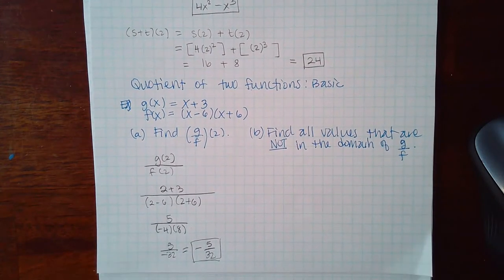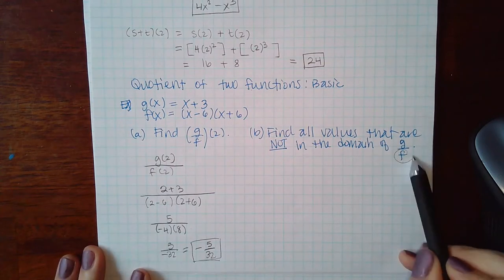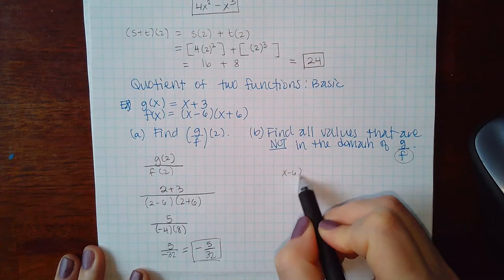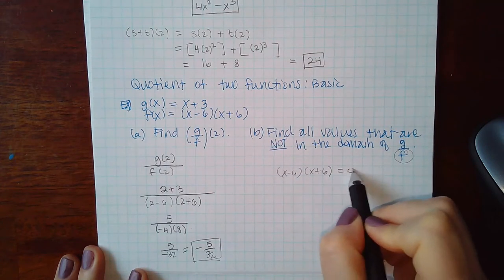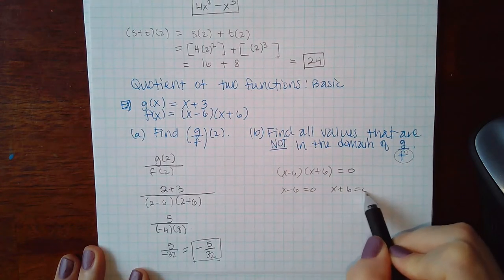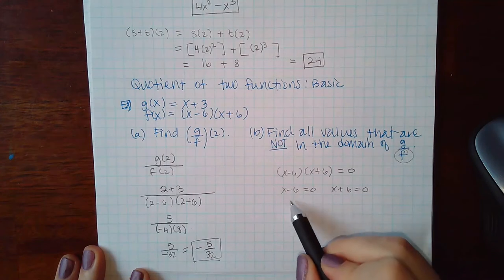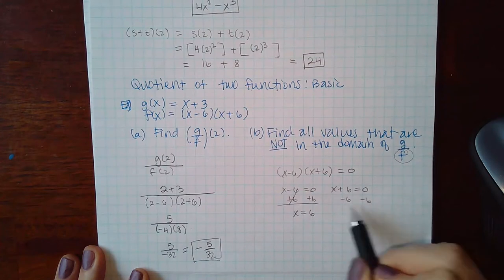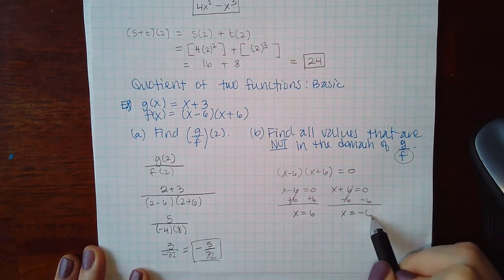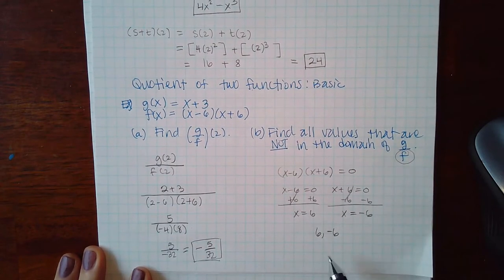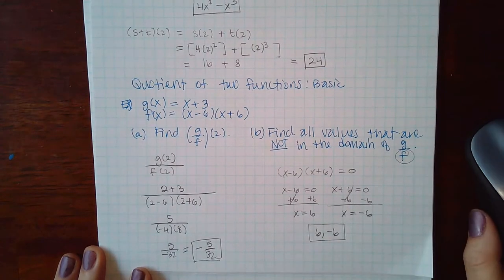Part b: find all values not in the domain of f/g. We need to find where f equals 0. Set (x−6)(x+6) = 0, so x−6=0 gives x=6, and x+6=0 gives x=−6. The two values not in the domain are 6 and negative 6, since those cause f to equal zero.